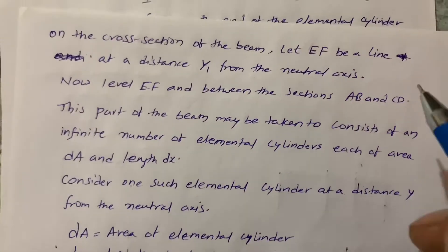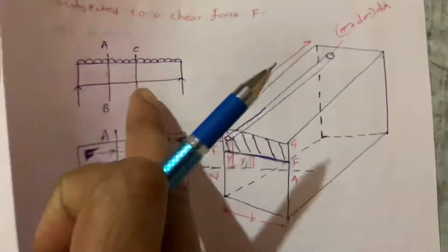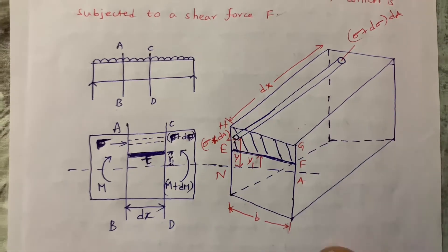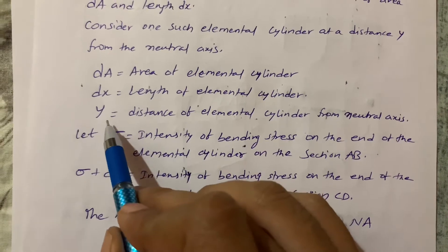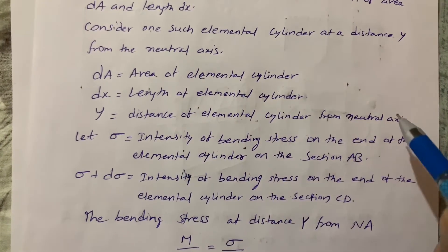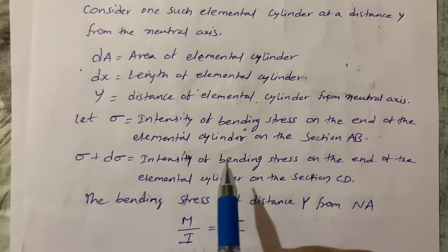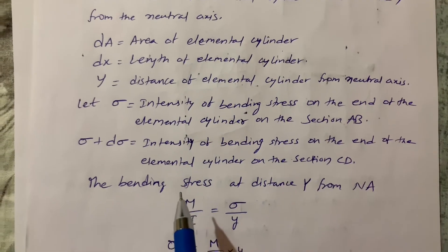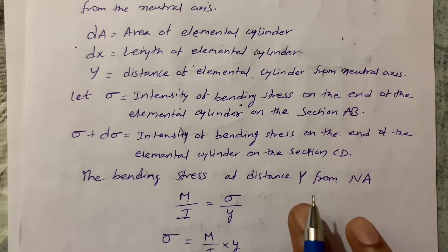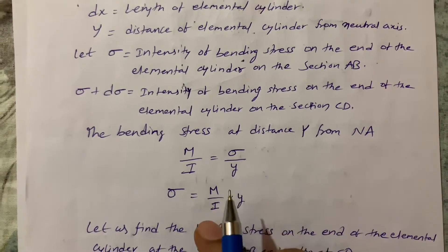I am considering an elemental cylinder. The area of the elemental cylinder is DA, the length is DX, and Y is the distance of the elemental cylinder from the neutral axis. Sigma is the intensity of bending stress at section AB, and sigma plus D sigma is the intensity of bending stress at section CD. We know the bending equation: M by I equal to sigma by Y, so sigma equal to M by I into Y.